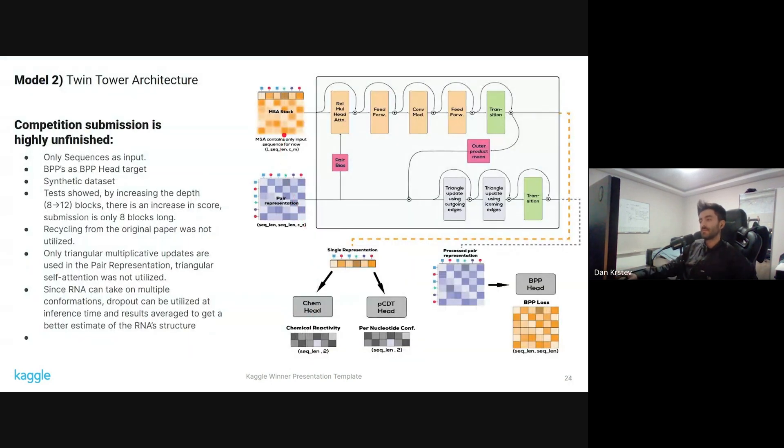Some important and interesting findings. Most of the findings are about the twin tower model. So the competition submission, unfortunately, is highly unfinished. I just was competing solo and I couldn't make it. I was competing on two different models. Only the sequences was used as input. I've tested this right now, but during the competition, this whole branch, the pair representation, was effectively shut down. So only the single representation was used for the final submission.